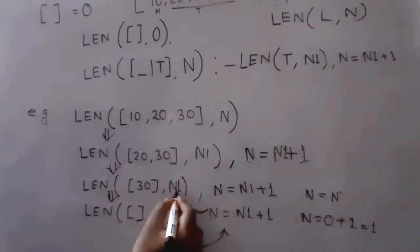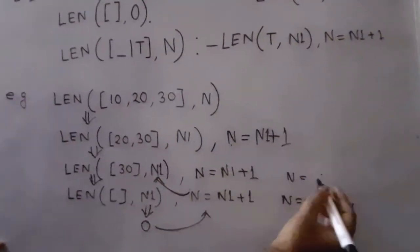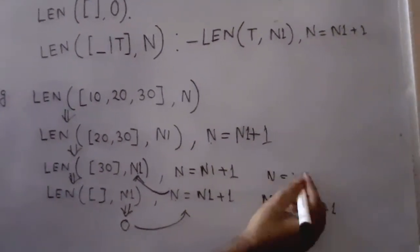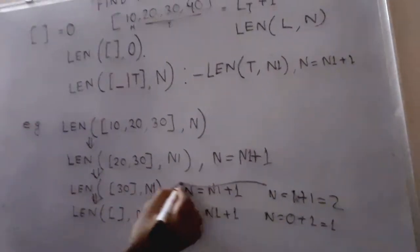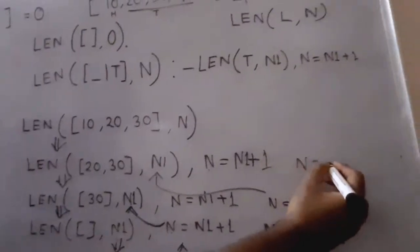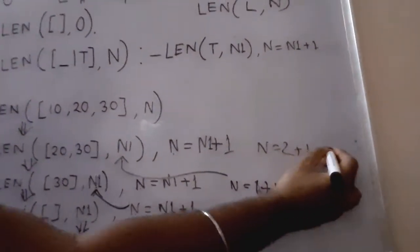Then N1 will be one, so the value will be N1 + 1 = 1 + 1 = 2. This value will be passed to the previous call. So the value of N will be 2 + 1 = 3.